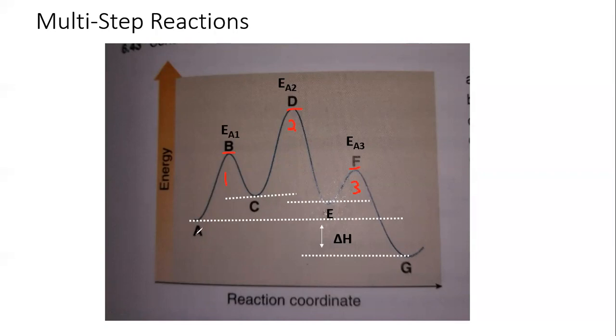But notice the energy difference of reactants and products still gives you the delta H. Now this C and E, as we'll learn later on, are called reaction intermediates. You'll hear that term a lot. Reaction intermediates get formed in one step and consumed in another step. And so C and E are intermediates in this three-step reaction.